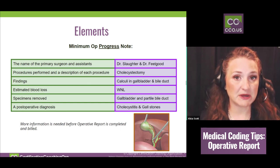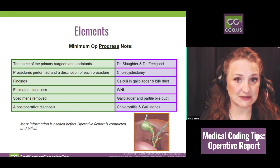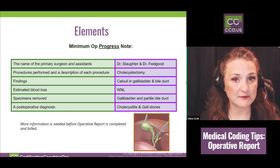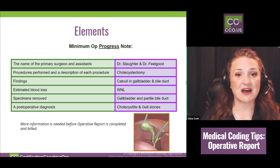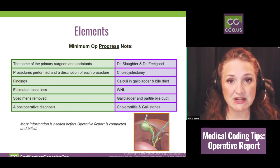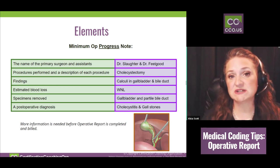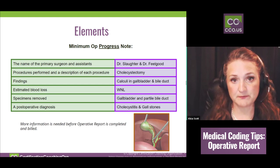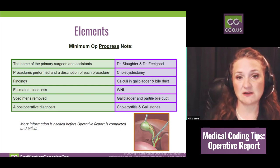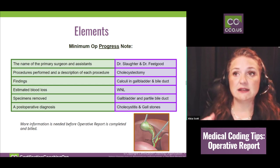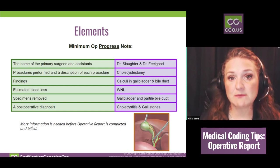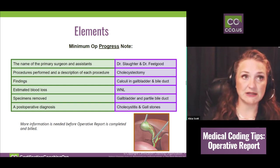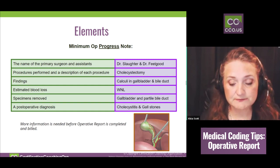The next pertinent thing is knowing what procedure was actually performed. If more than one procedure was done, you need to note that. For example, someone goes in for a laparoscopic cholecystectomy to take out their gallbladder, but there's a complication and they can't do it laparoscopically, so they have to open the patient up. That happened to me when I had my gallbladder out many years ago.